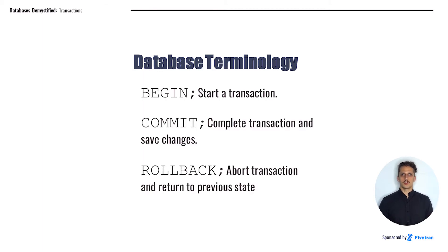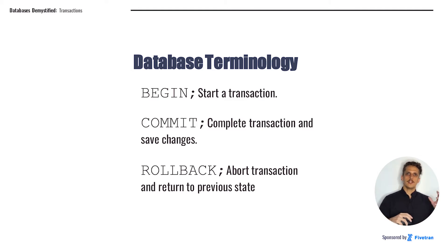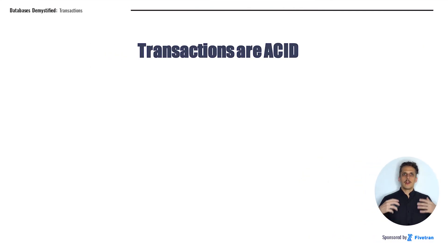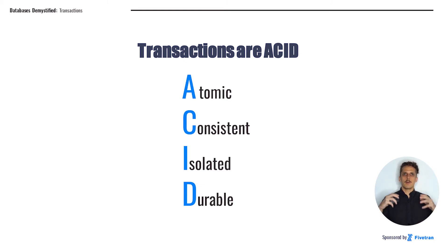BEGIN will start a transaction. COMMIT will complete a transaction and save those changes. And ROLLBACK will abort a transaction that has begun and roll back to the previous state. You'll often see these words referenced if you do any reading about transactions on the internet. Database practitioners very frequently refer to transactions as being ACID — that's an acronym for Atomic, Consistent, Isolated, and Durable.